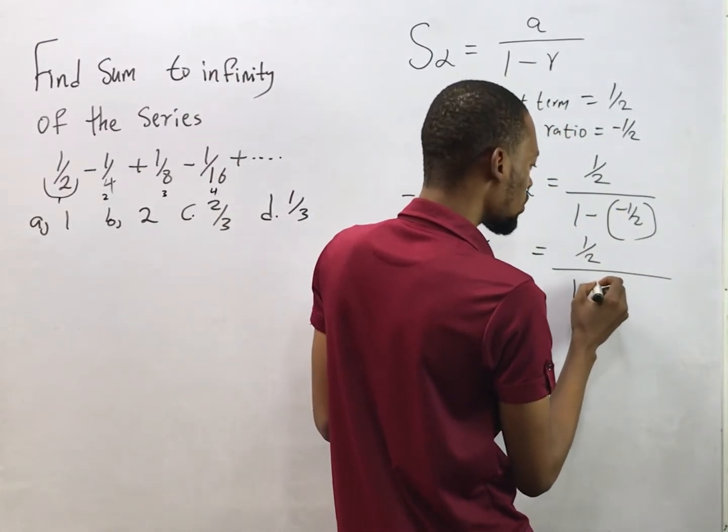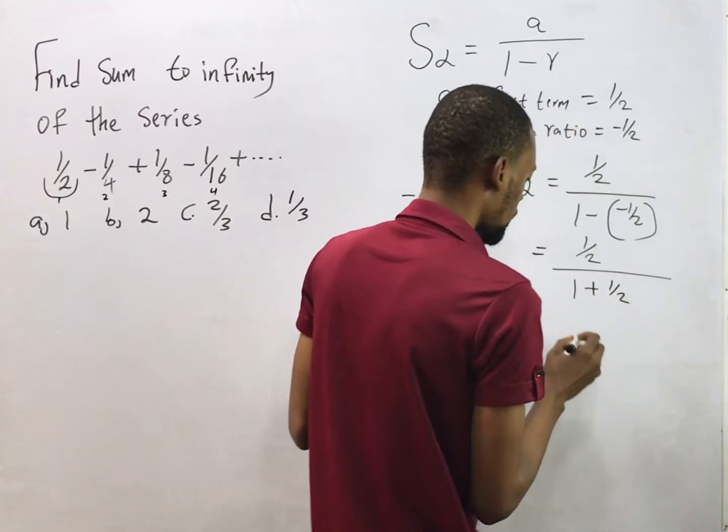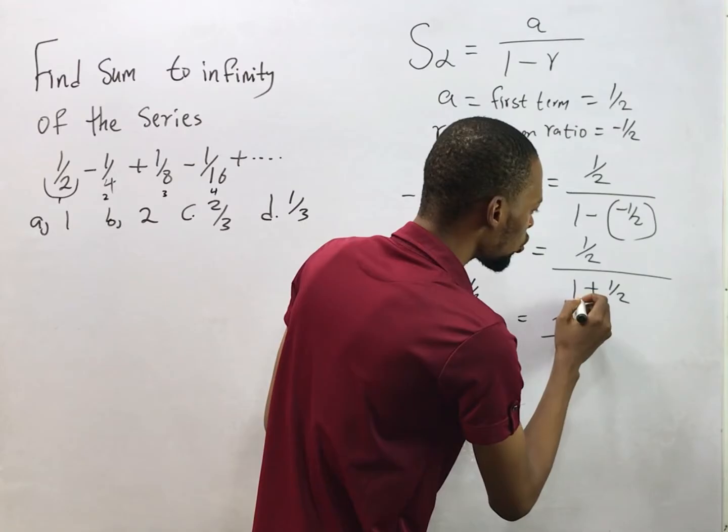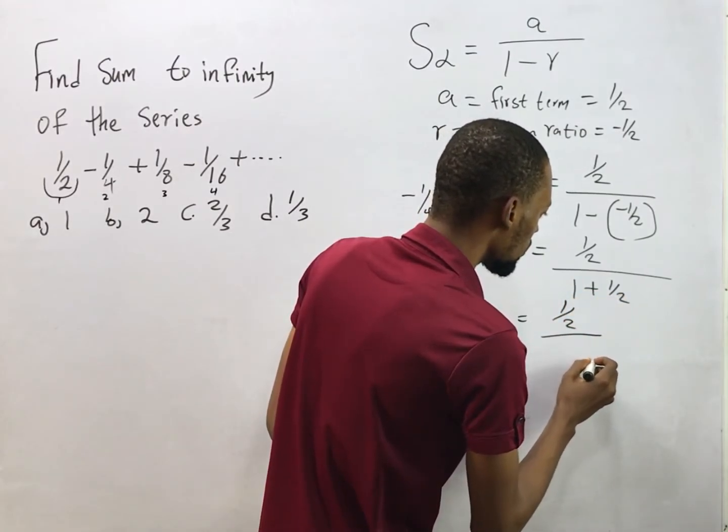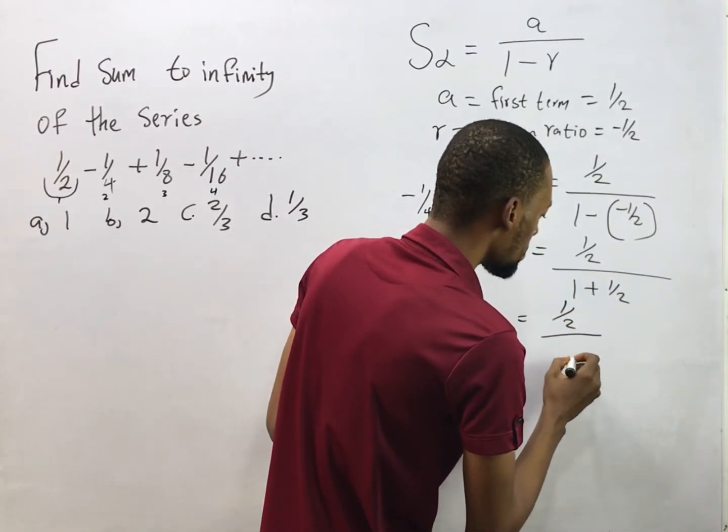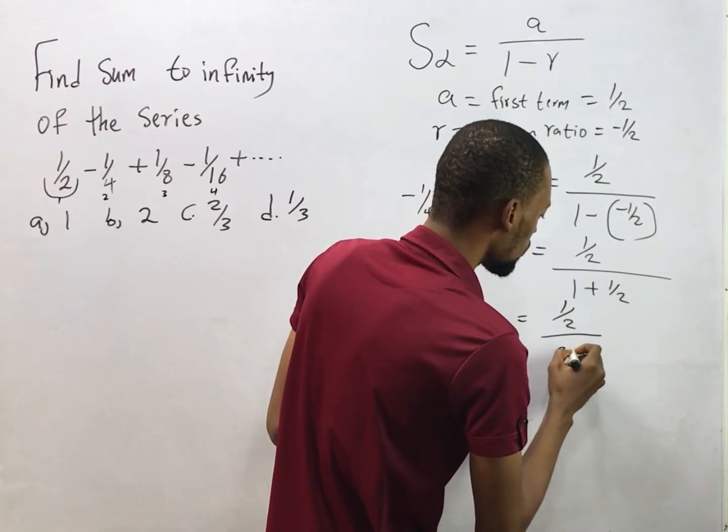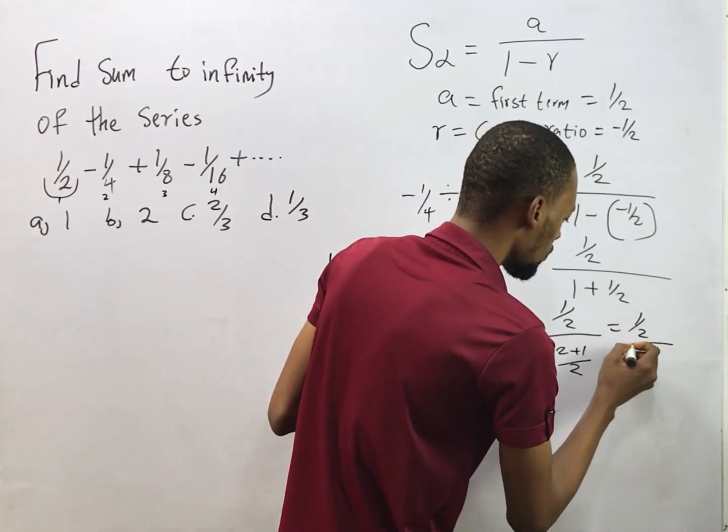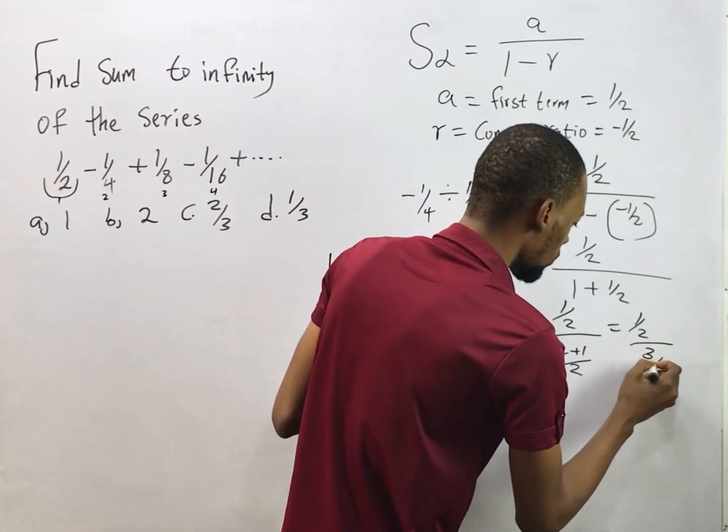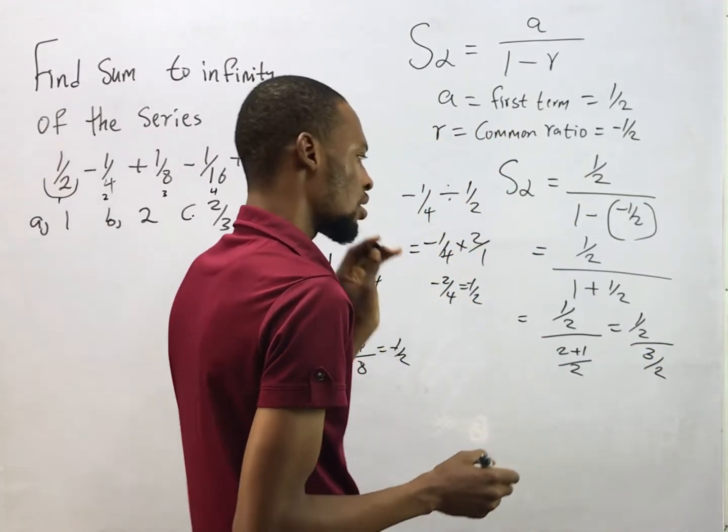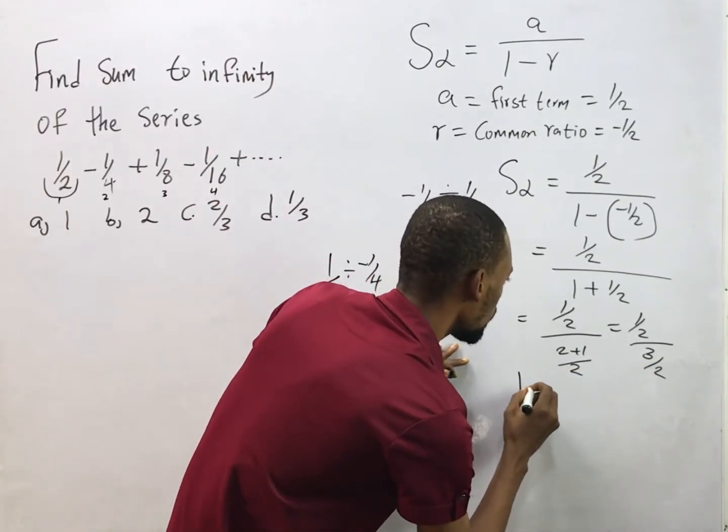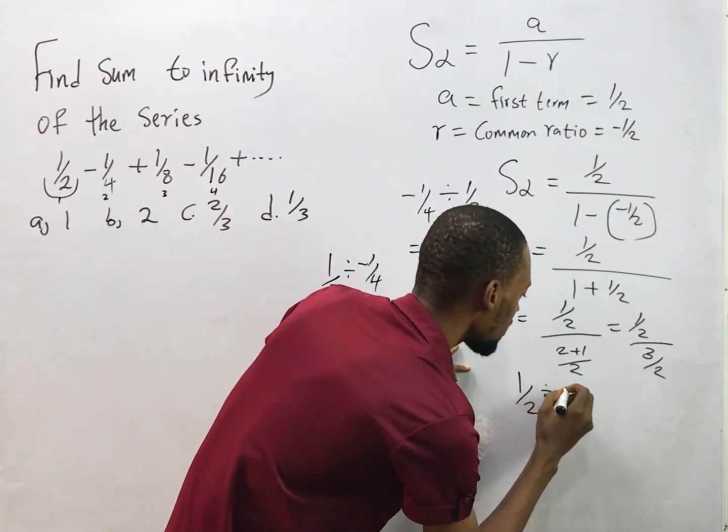Sum to infinity becomes 1/2 all over 1 minus times minus is plus, so here has changed to plus 1/2. So simplifying 1 + 1/2, if you look for the LCM you get (2+1)/2. This will give you 1/2 over 3/2.